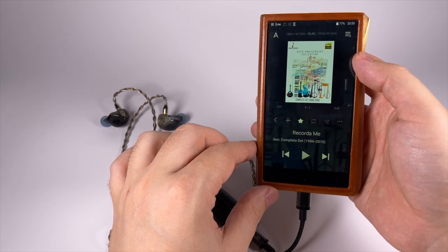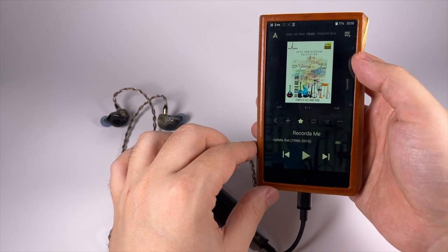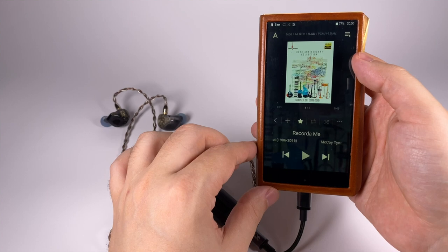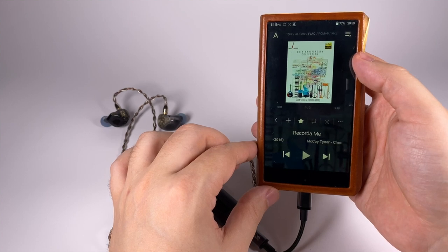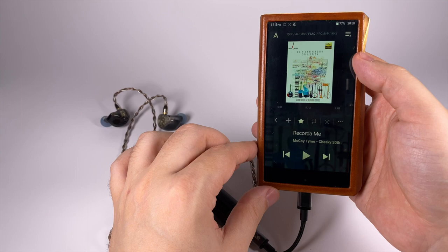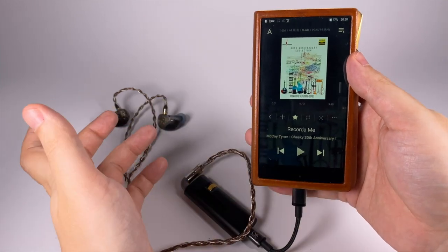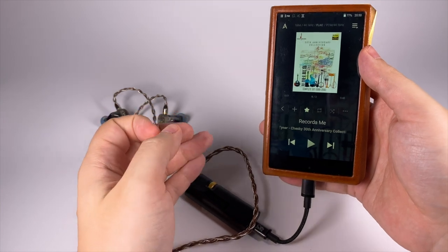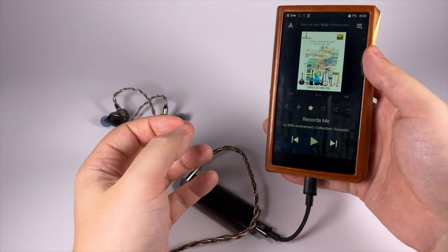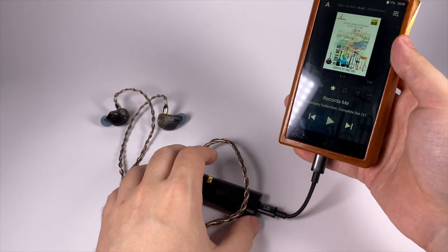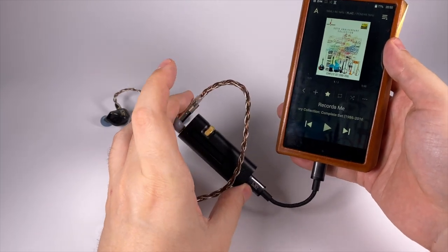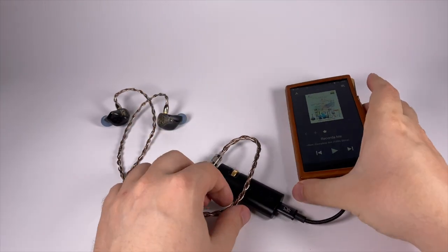As an example, here is a nice Chesky 30th Anniversary Collection Complete Box Set. As you can see, many years of Chesky works is presented here. Track is named 'Recorder Me,' recorded by McCoy Tyner, I suppose I pronounced it correctly. It's a classical Chesky record with really good quality, with really saturated high frequencies. And this digital-to-analog converter delivers them at a really good level.